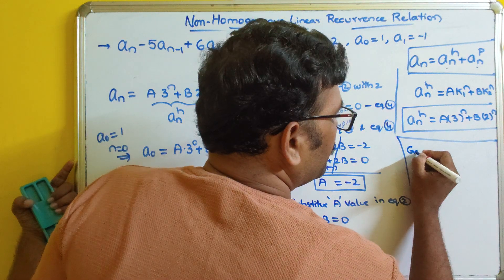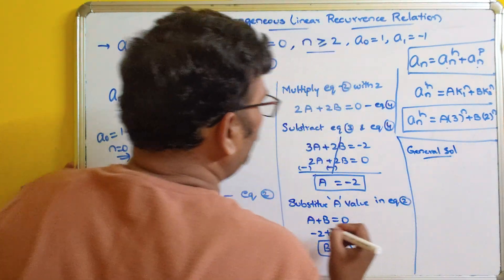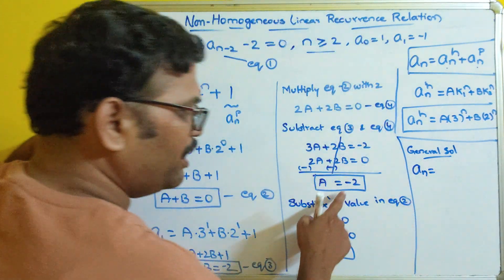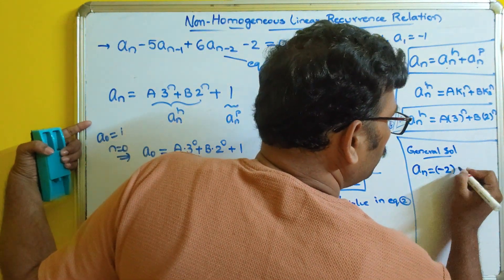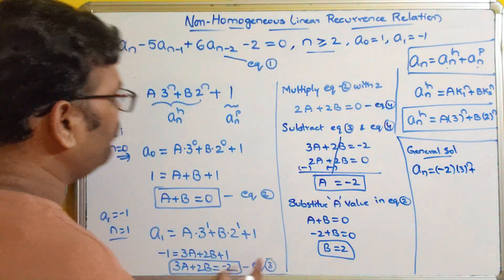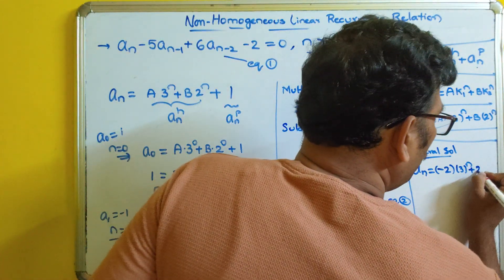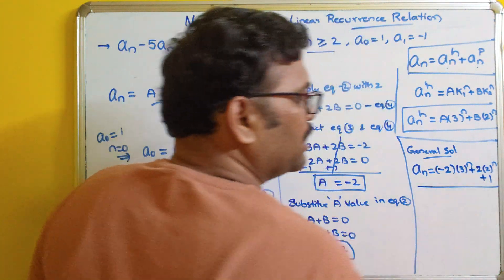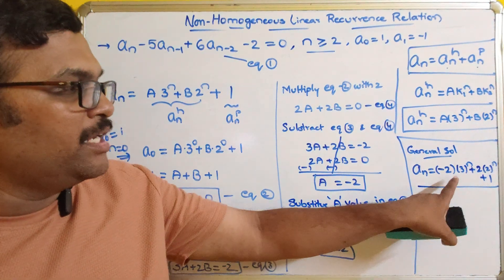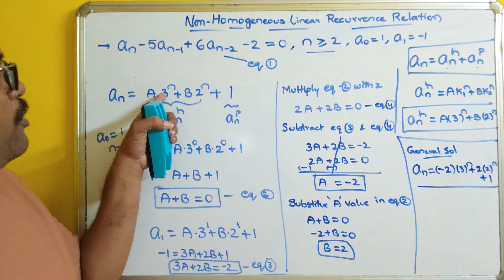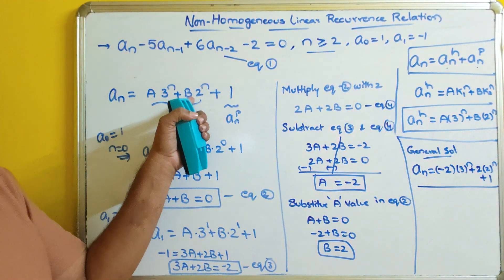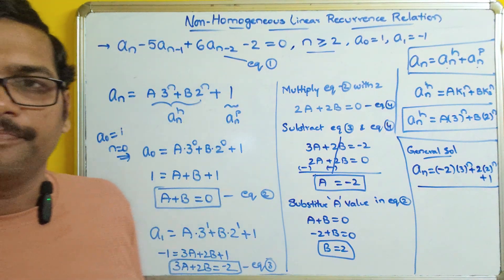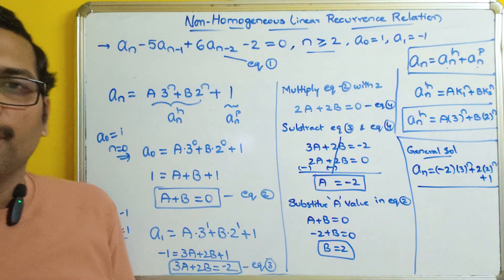So the final general solution is: a_n = −2·3^n + 2·2^n + 1. You can also consider k1 = 2 and k2 = 3 — there is no change. This is the complete general solution.